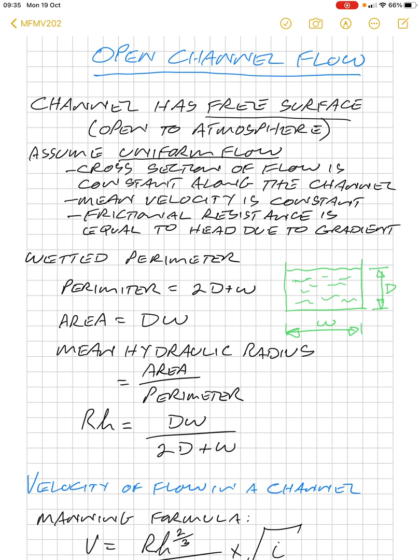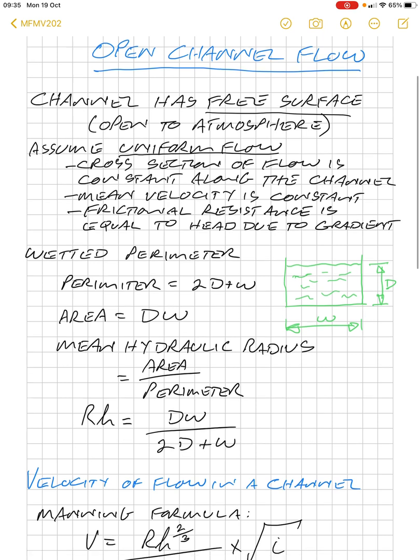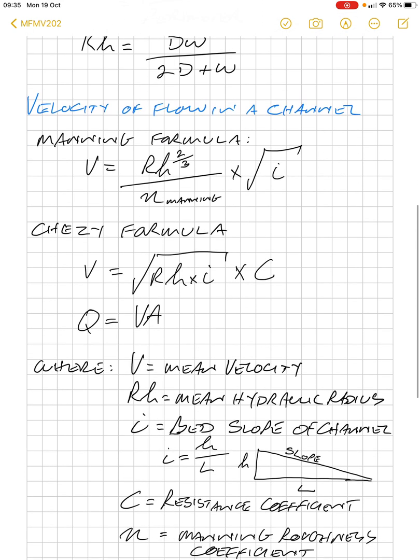And then we have a concept called the mean hydraulic radius, which is used later on to calculate velocity. This is taking the area dividing by the perimeter, so designated by the letter Rh. Area is Dw and the perimeter is 2D plus w, so that's our formula for the hydraulic radius, but that's only applicable to a rectangular channel. We'll look at different cross-sectional areas in different problems going forward.